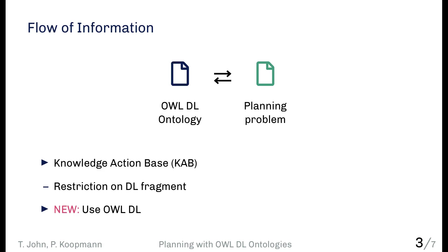This is a common concept, but in general you have to restrict the fragment of description logic used for the ontology — if it is too powerful, there is no automatic solver for these kinds of problems. What we introduce as the novelty in our work is that you can use the full OWL DL fragment, expressing essentially everything in OWL, and combine this ontology with a planning specification to automatically generate a plan that solves your problem.